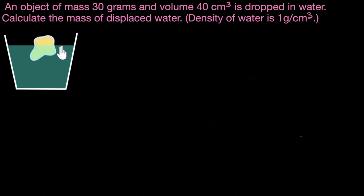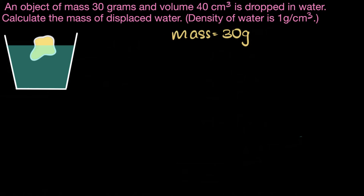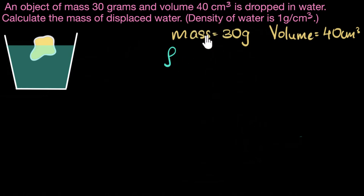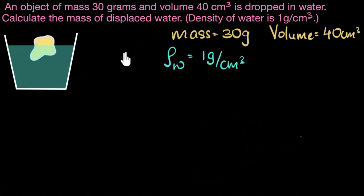Let's quickly write down what is given to us. We are given the mass of the object: 30 grams. We are given the volume of the object: 40 cm cubed. We are also given the density of water — using the symbol rho for density — the density of water is one gram per cm cubed. And we need to calculate the mass of the displaced water, which I'll call MW. Not the mass of the entire water, but how much water got displaced.